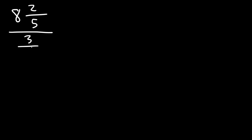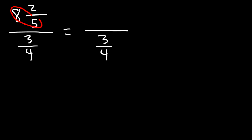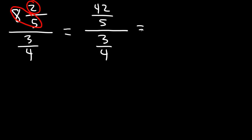8 and 2 over 5, let's divide it by 3 over 4. One way you can do this is by converting the mixed number into an improper fraction. We're going to multiply 8 and 5, so 8 times 5 is 40, and then we're going to add 2 to the numerator, and so that's going to be 42 over 5 — the denominator stays the same.